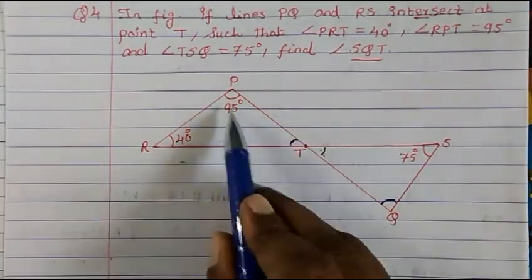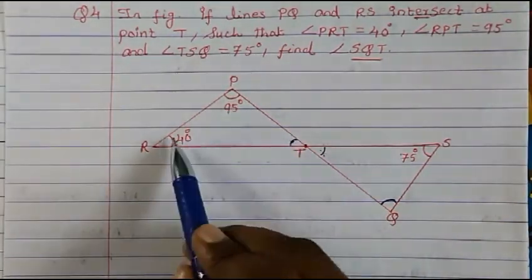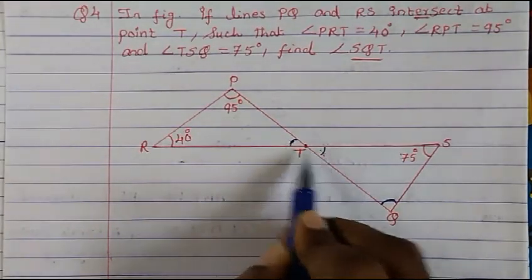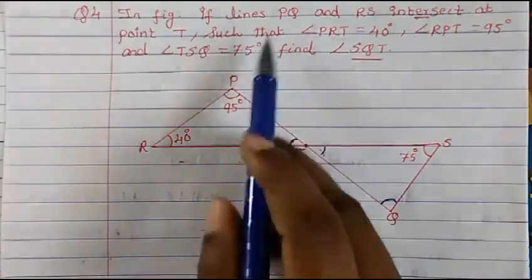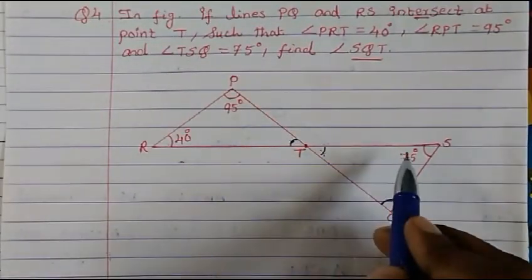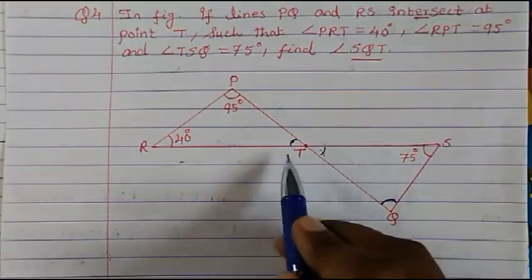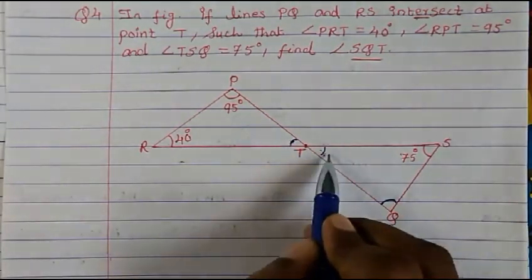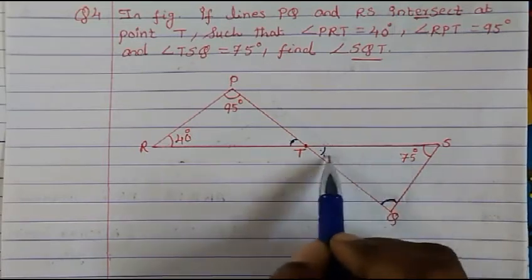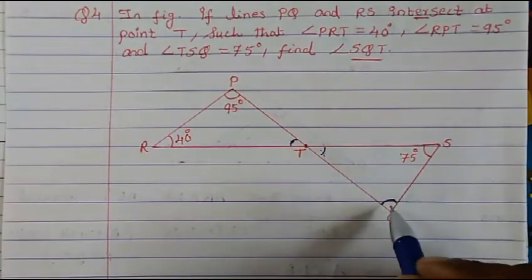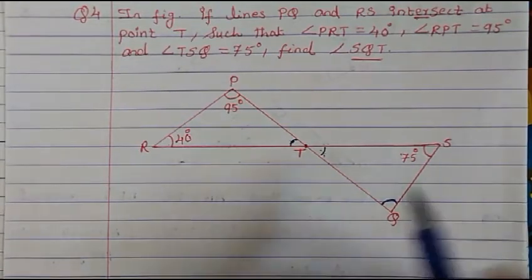We will begin from here because already two angles are given to us. Once we get this angle, we know the vertically opposite angle is equal to it. Because when two lines intersect, the vertically opposite angles are equal to each other. So once we get this value, we sum these two angles and subtract from 180 to get the third angle.